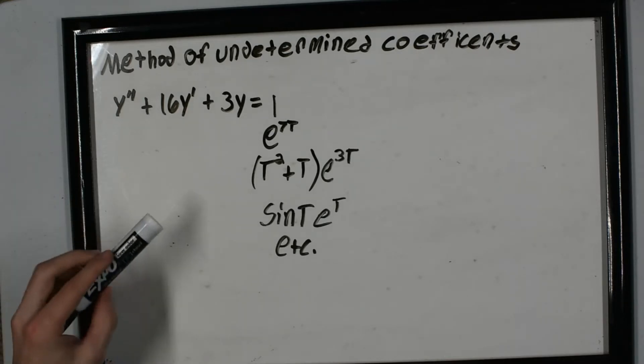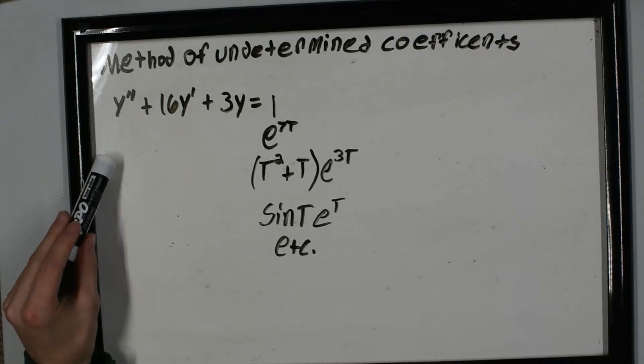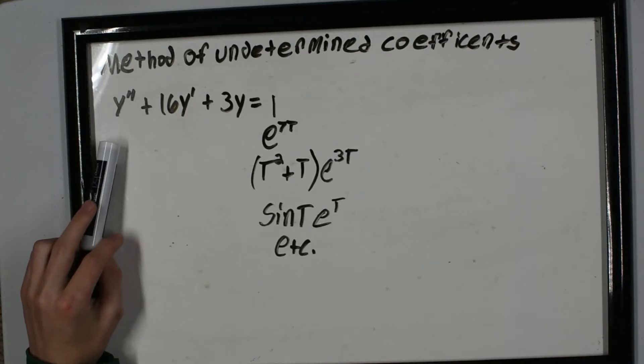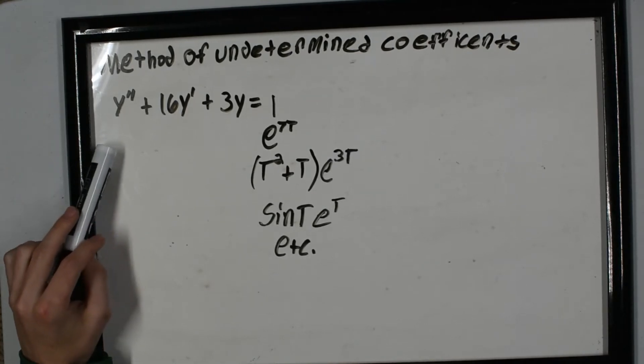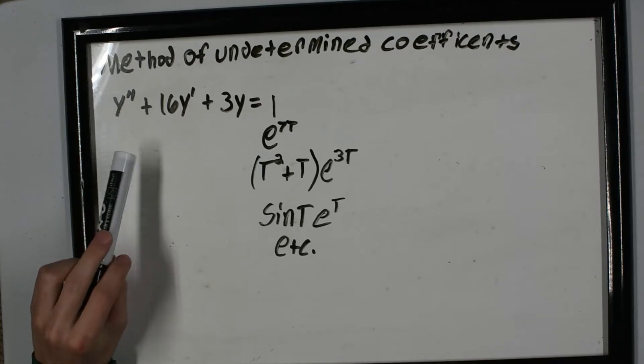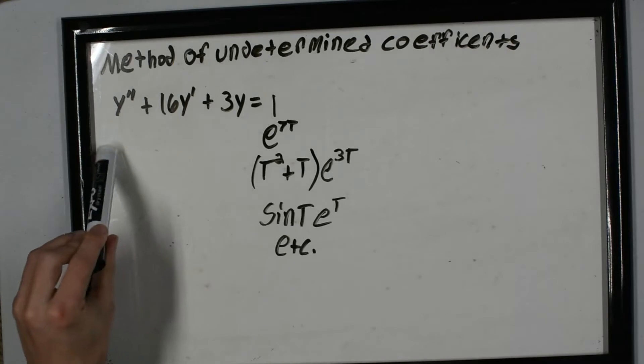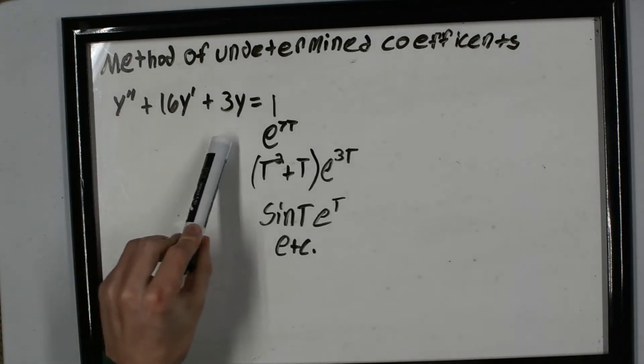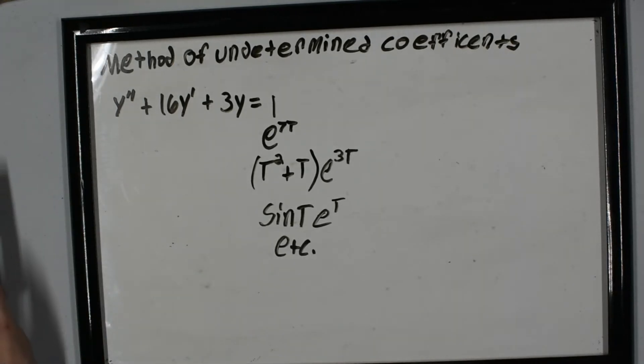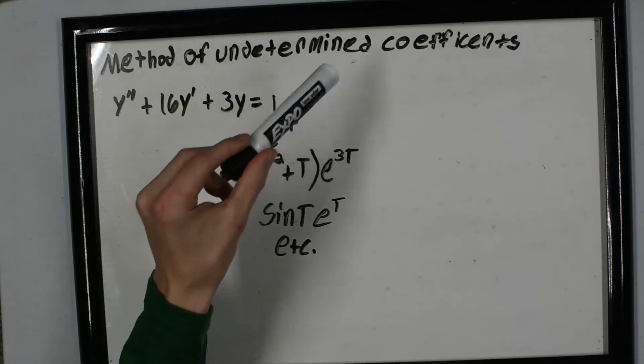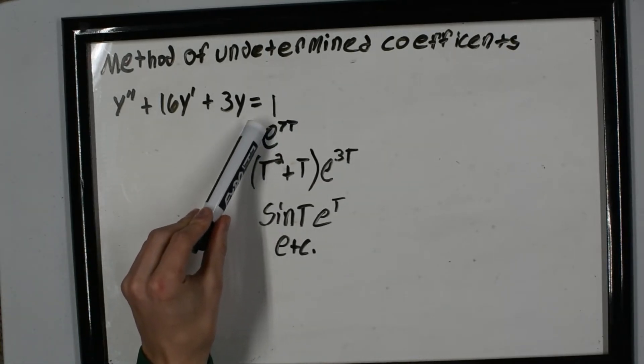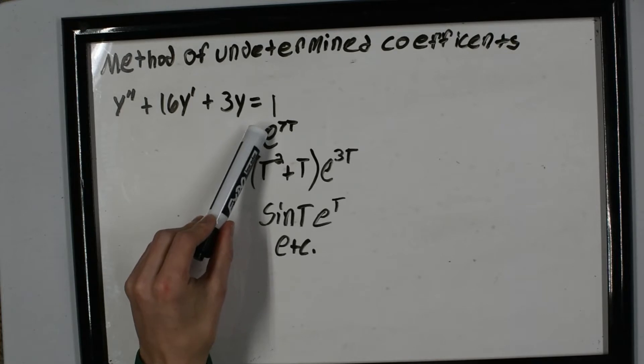We want to use the method of undetermined coefficients when we have some differential equation—y'', it could be y''' + 16y', any combination of y primes and y. But what matters is on the right side of the equation what we have.